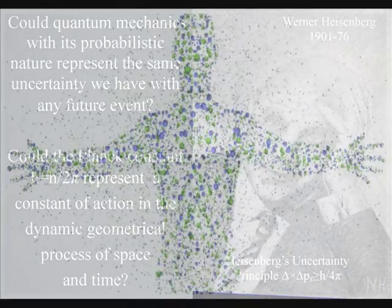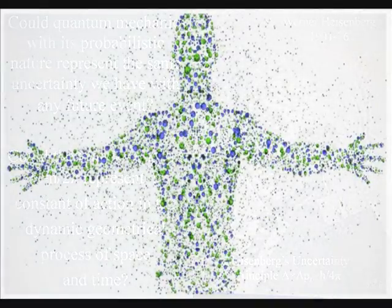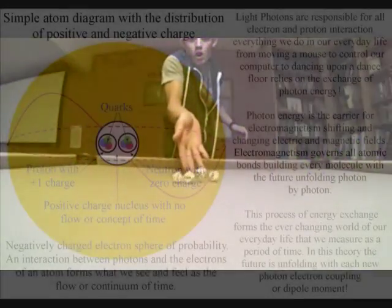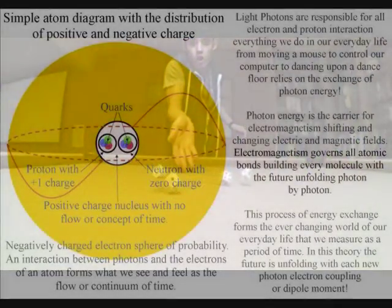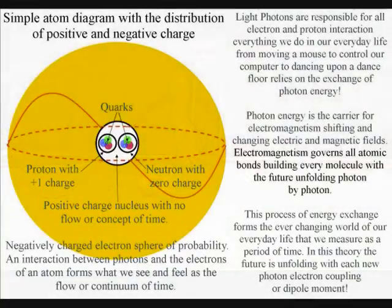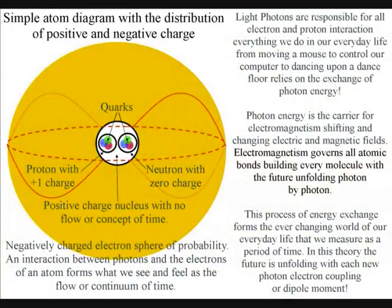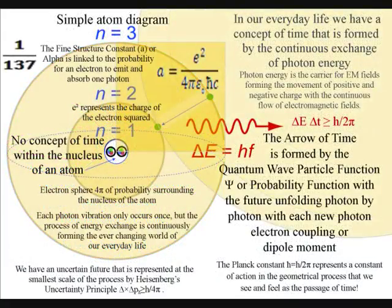Isn't it logical that if we look down at an individual atom we would see the same uncertainty? We would see the uncertainty of everyday life in the form of an electron probability cloud surrounding the nucleus of each atom. When light comes in contact with the electron probability cloud, it forms a photon electron coupling or dipole moment.